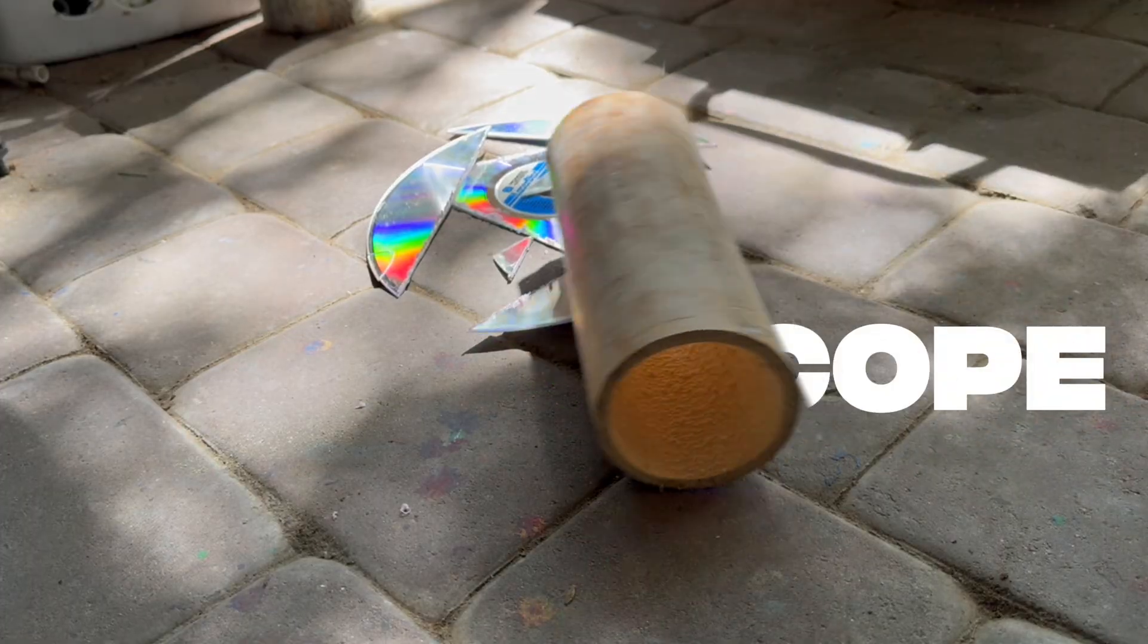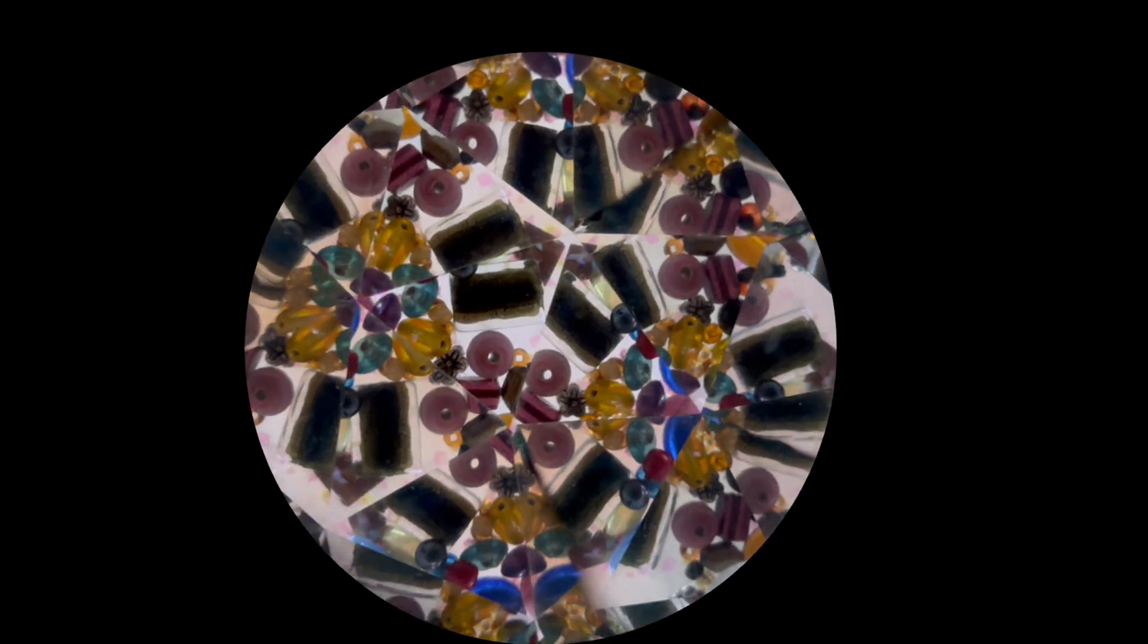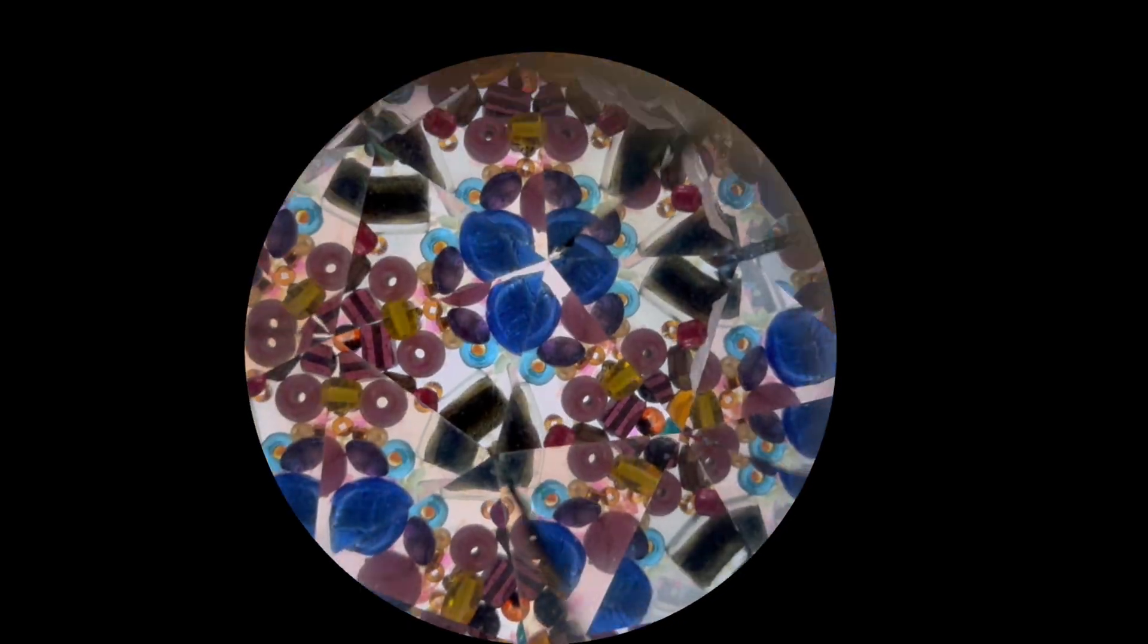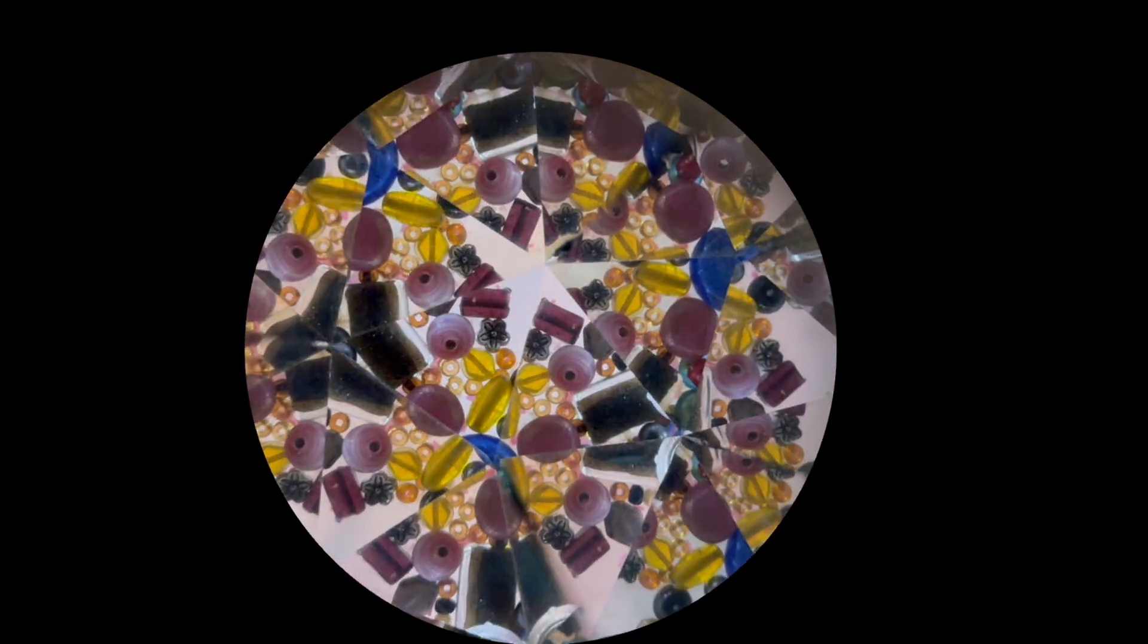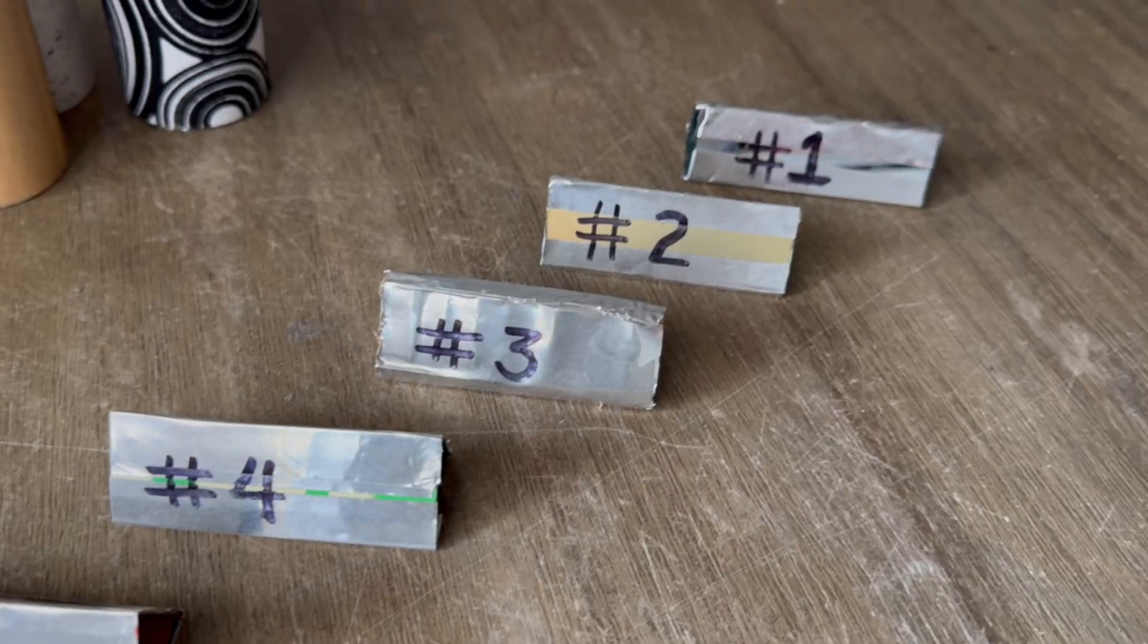Today we're making something magical, a kaleidoscope. It's part art project, part science experiment, and 100% fun. And I'll show you five different reflective surface options from worst to best.